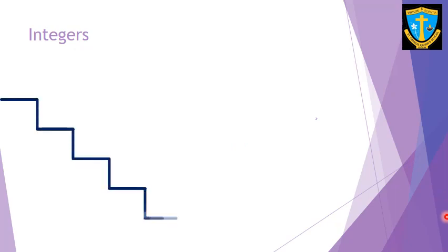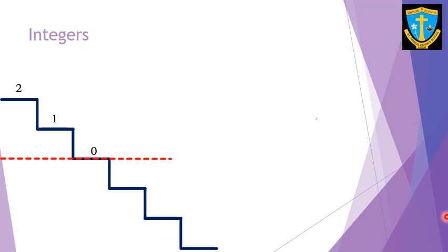Let us look at some examples of integers in real life. Integers can be based on different real things, like steps which go up and down, and the ground level. Let's mark the ground level as zero. The numbers which go above zero are positive numbers or natural numbers, and the numbers which go below can be marked with a negative sign and are called negative numbers.